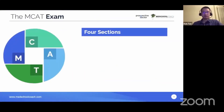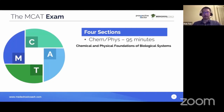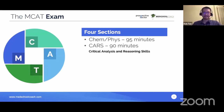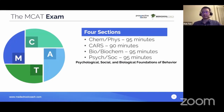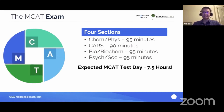The MCAT exam has four sections. The first is the ChemFIS section — Chemical and Physical Foundations of Biological Systems — 95 minutes. The second is the CARS section — Critical Analysis and Reasoning Skills — 90 minutes. The third is the Bio-Biochem section, Biological and Biochemical Foundations of Living Systems. The fourth is the Psychological, Social, and Biological Foundations of Behavior. Each section is about an hour and a half of testing time. On your actual exam, with breaks and tutorials, your total testing experience will be about seven and a half hours.